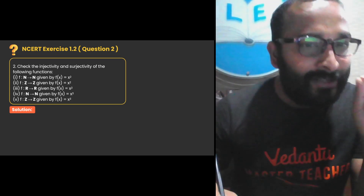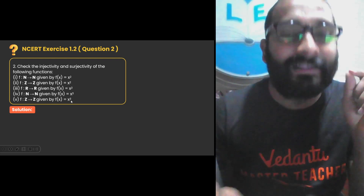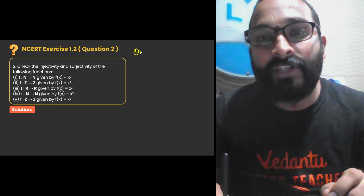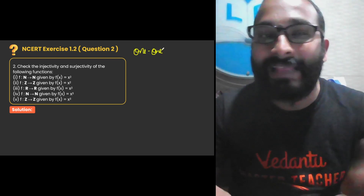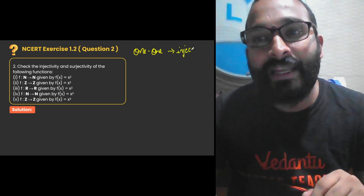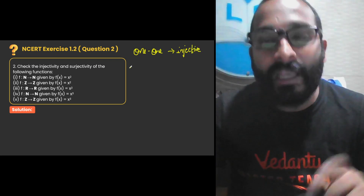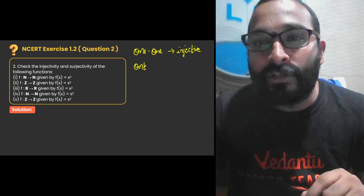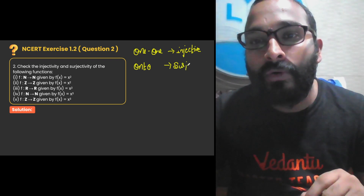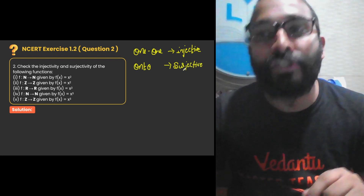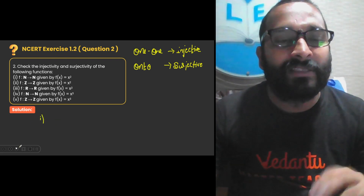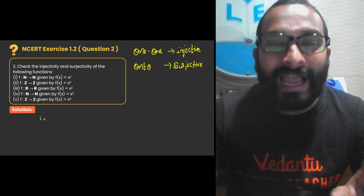Let us read the question first. They are asking us to check injectivity and surjectivity of the following functions. If you want to check whether a given function is injective, injective is nothing but one-one. If it is one-one, then we call the function injective. If the given function is onto, then we call it surjective. So always remember: one-one is injective, onto is surjective. The domain and co-domain keep changing across questions, so we need to be very careful.